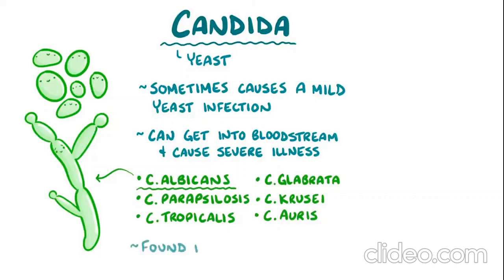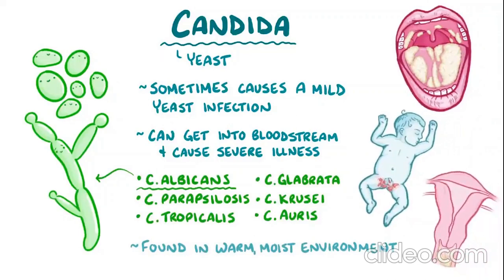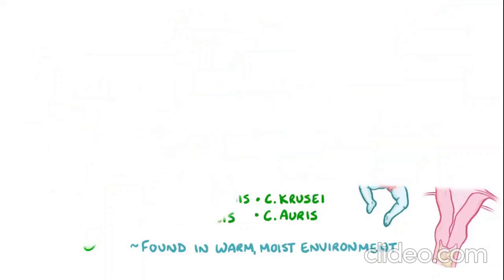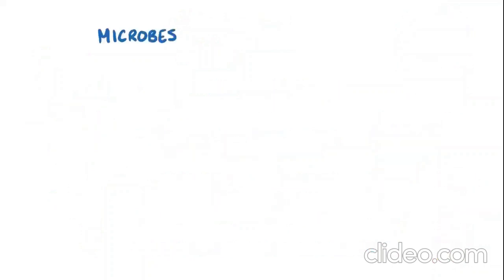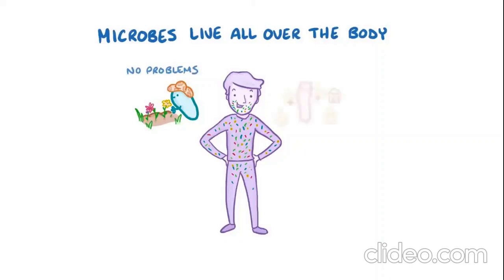Candida is found throughout the body. It likes warm, moist environments like the mouth, the diaper region of babies, and in women it can be found in the vagina. It is normal for microbes like bacteria, fungi, and viruses to live all over the body, but each microbe differs in whether it is colonizing the body — just living without causing problems — or infecting the body and causing tissue damage.